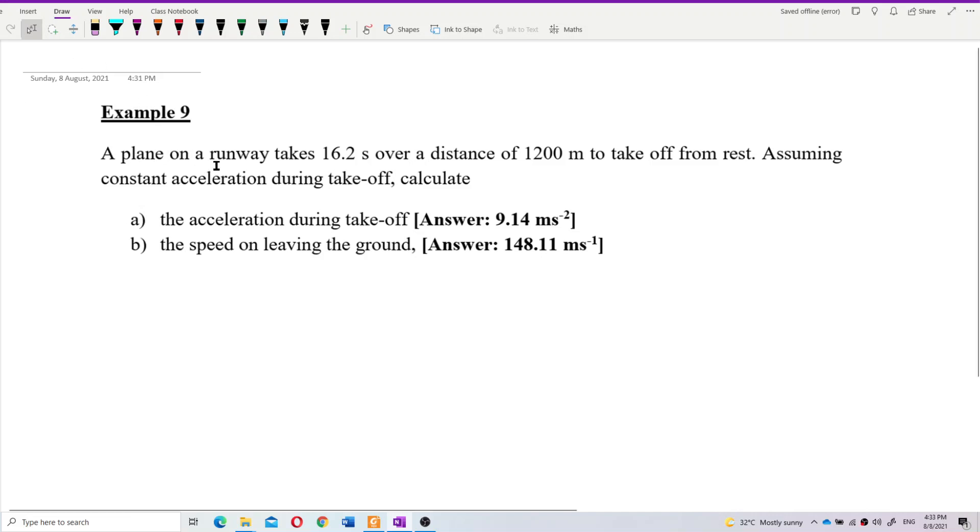A plane on a runway takes 16.2 seconds over a distance of 1,200 meters to take off from rest. Assuming constant acceleration during take-off, calculate the acceleration during take-off.